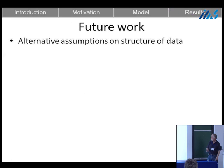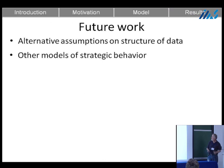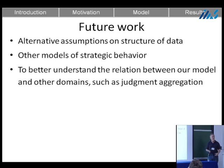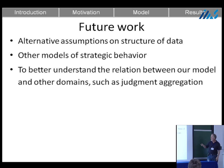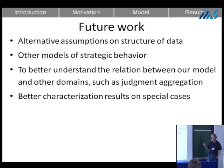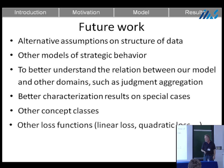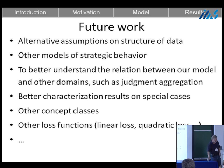There is lots of future work: alternative assumptions on the data, other models of strategic behavior such as lying about the location of a point in addition to its label, relationships between our models and judgment aggregation, other concept classes, and other loss functions beyond the 0-1 loss. Thank you.